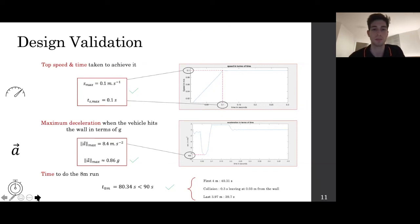The maximum deceleration when hitting the wall is 0.86 g according to this model. And finally, we found out that the longest run of 8 meters should take 80.34 seconds, which is indeed lower than our 90 seconds target.